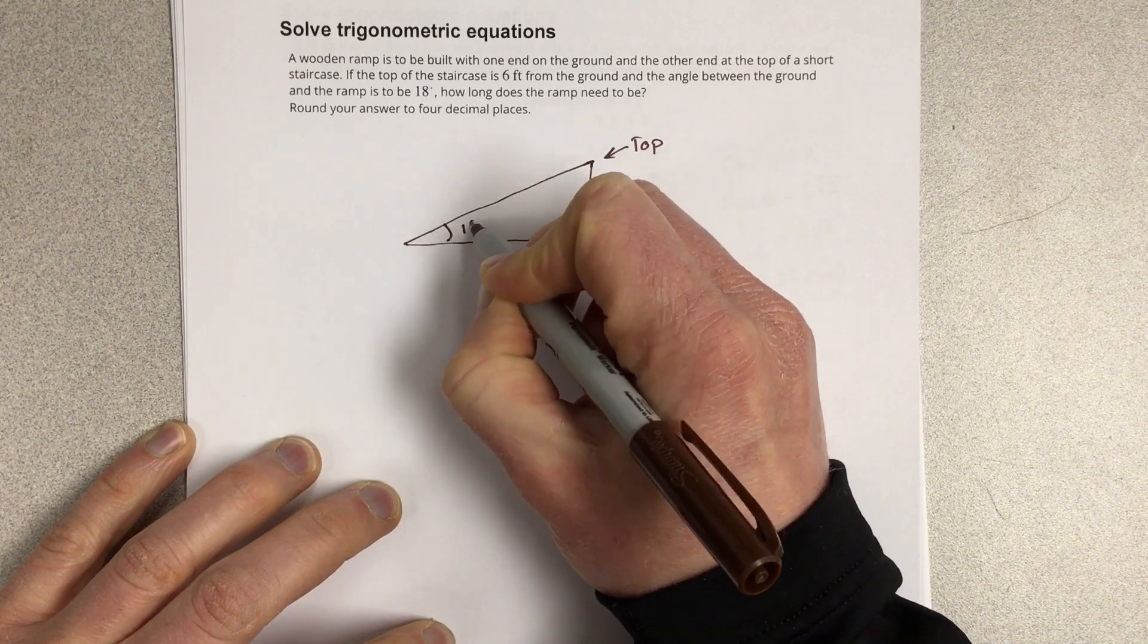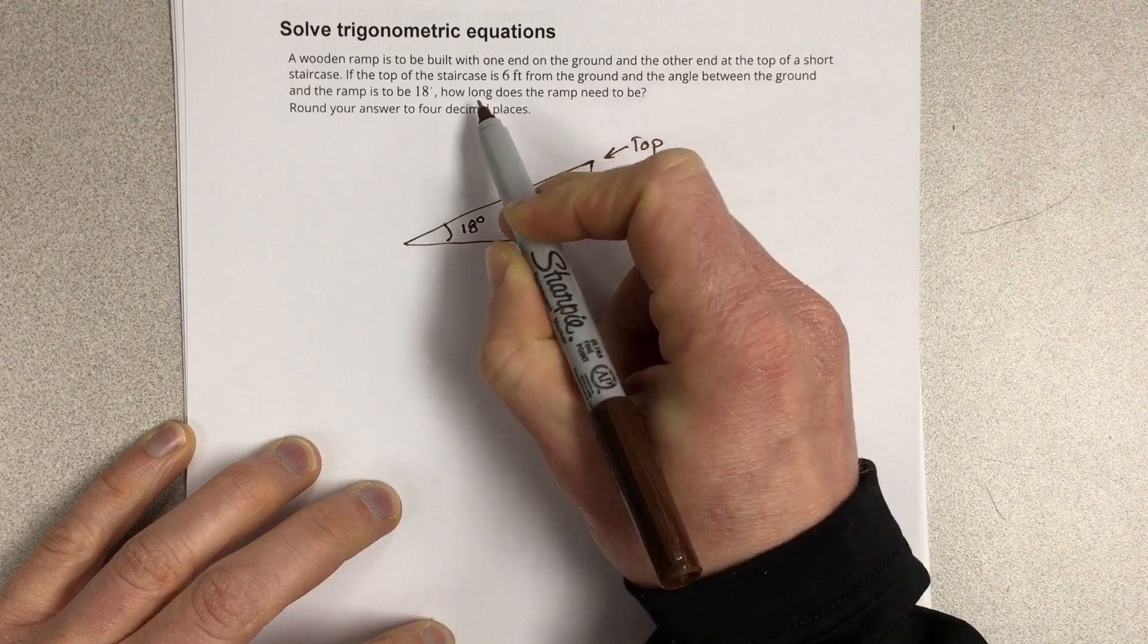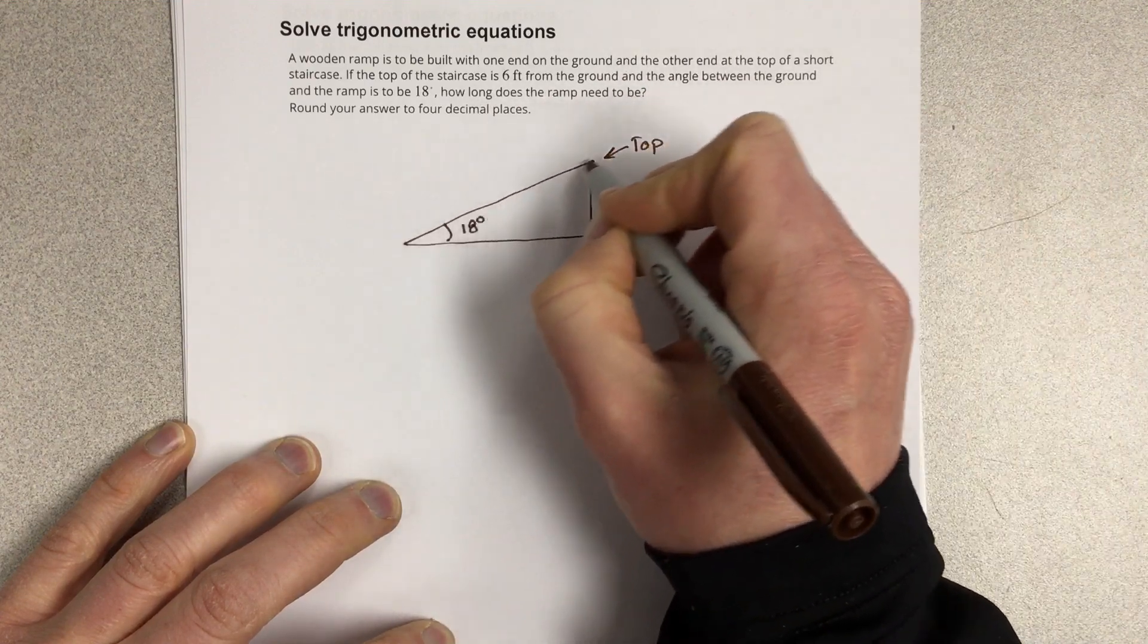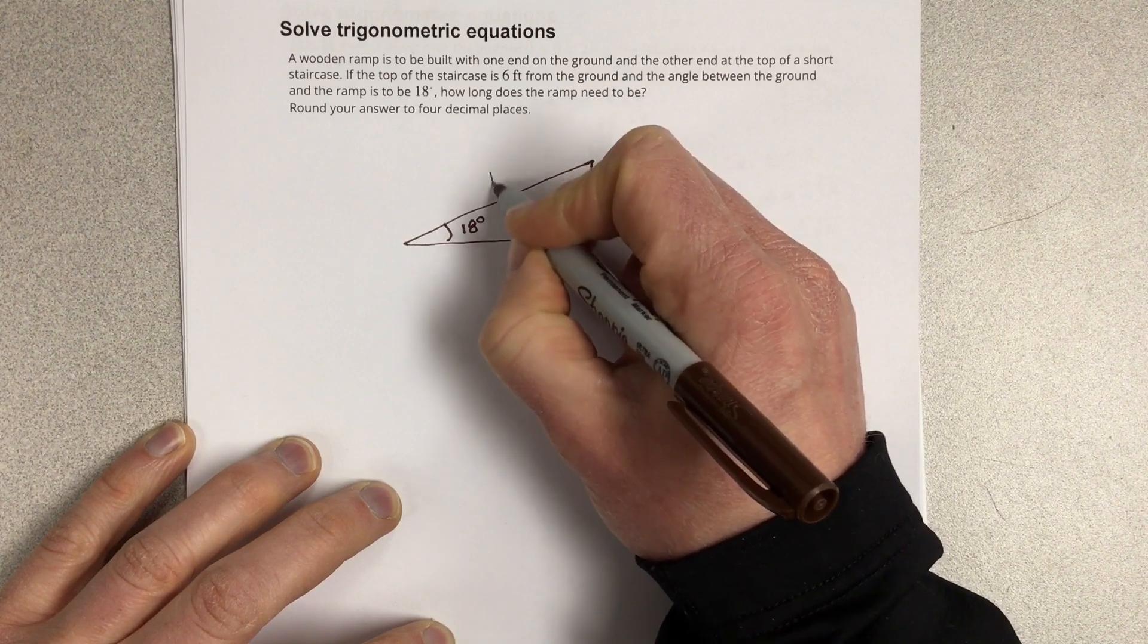And the angle here is 18 degrees. They want to know how long the ramp needs to be. So I assume they're asking for this distance here, which would be h.